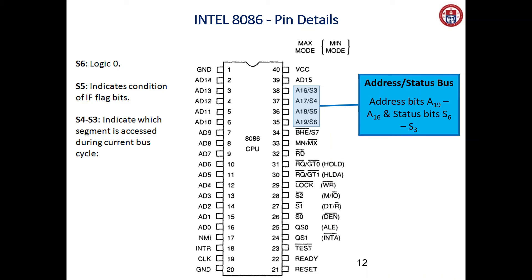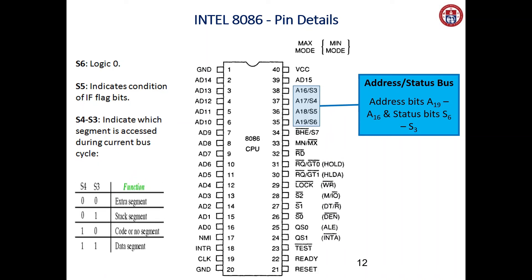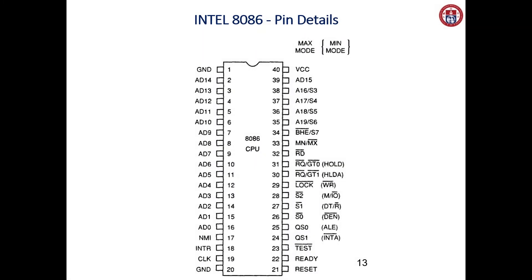Regarding the status bits: S6 is always logic 0. S5 indicates the condition of the interrupt flag bit. S3 and S4 indicate which segment register is being accessed during the current bus cycle. We have four segment registers: extra segment (ES), stack segment (SS), code segment (CS), and data segment (DS). When S4 and S3 are 00, ES is accessed; 01 means SS; 10 means CS; and 11 means DS.